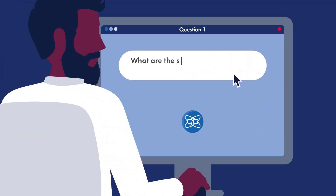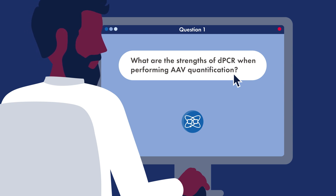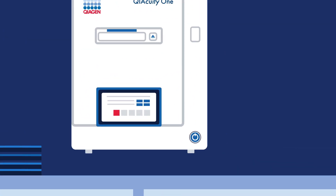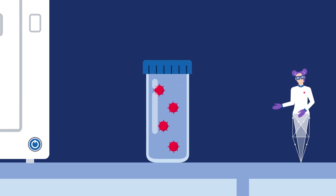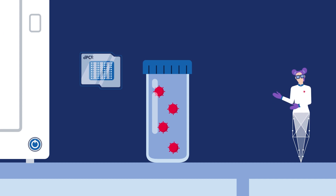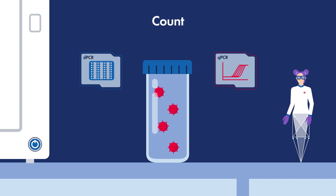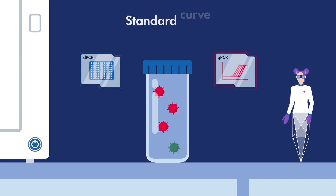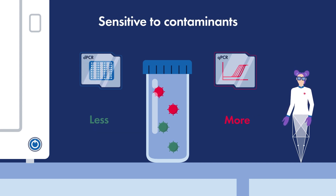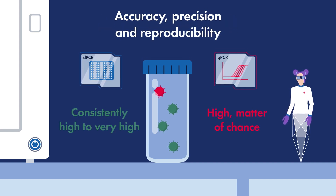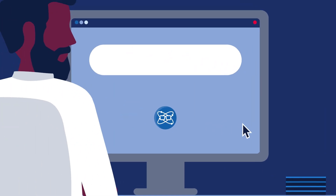Question 1: What are the strengths of dPCR when performing AAV quantification? Digital PCR provides unmatched accuracy and precision needed to detect AAV viral titers in comparison to qPCR. Unlike qPCR, dPCR provides an absolute count of nucleic acids without relying on a standard curve. It is also less sensitive to contaminants that affect amplification, leading to the accurate estimation of viral titers — critical to the safety and effectiveness of gene therapy. Let's have a look at the next question.